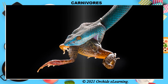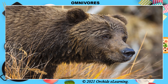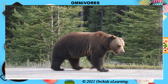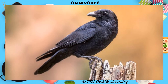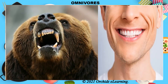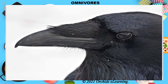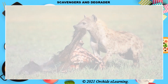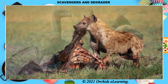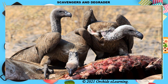Omnivores are those that eat both plants and the flesh of other animals. Bear, raccoon, crow, and human beings are examples of omnivores. Omnivores such as bears and human beings have different types of teeth that help them eat both plants and flesh. Omnivore birds such as the crow have sharp and pointed beaks that help them eat a variety of food. Some birds and animals, instead of hunting live animals, eat the flesh of already dead animals — vulture is one such bird. These animals are called scavengers.